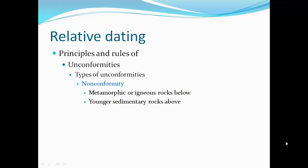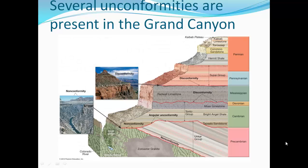Other types of unconformities: a nonconformity, where metamorphic or igneous rocks are below and the younger rocks are sedimentary. Here we have a nonconformity with metamorphic and igneous rocks and then a break in time. Here we also have deformed rocks that are tilted with horizontal rocks on top — that's an angular unconformity.